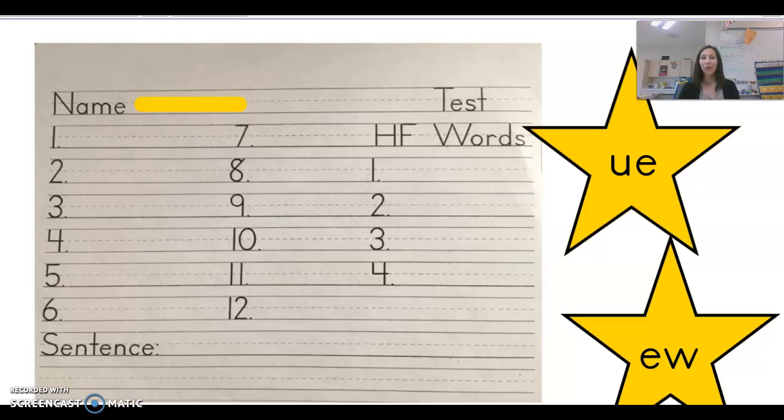Good morning, first grade. We are going to take our week 31 spelling test today, and this is the long U pattern spelled U-E or E-W. And we're actually going to split these up. So we'll start with U-E spelling, and then I'll let you know when we are switching to the other pattern.